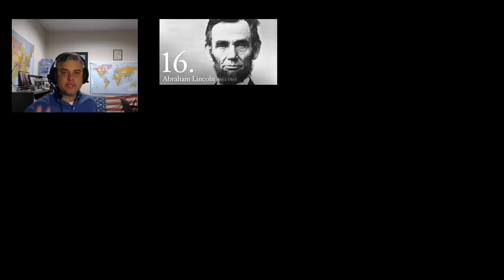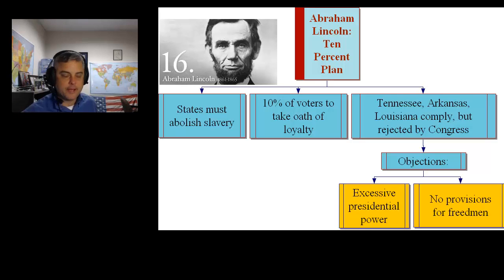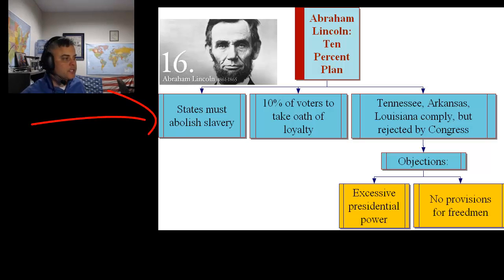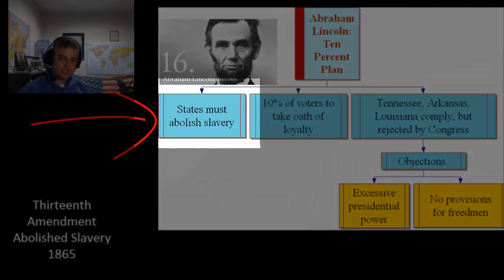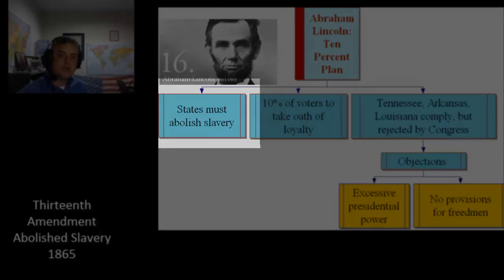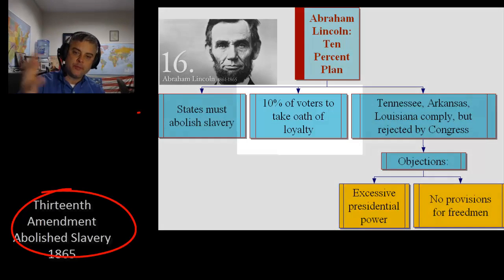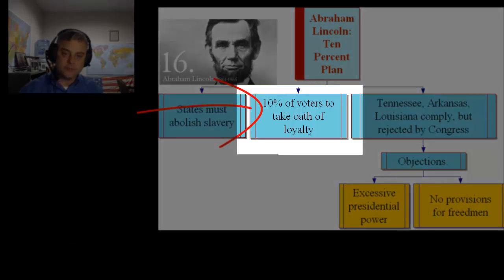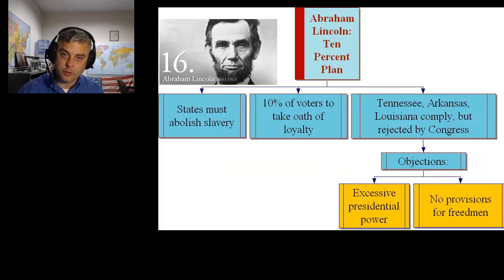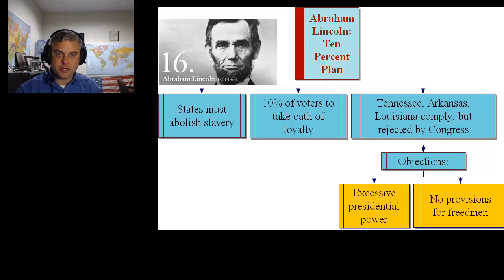So what's going to happen is he's going to issue his 10% Plan. With Abraham Lincoln's 10% Plan, all states must abolish slavery, which was made possible through the 13th Amendment, ratified in 1865. All it took for states to be brought back into the Union was 10% of voters taking a loyalty oath — meaning they promised never to secede from or rebel against the Union, the United States. When I say Union, that just means the entire United States, which under Lincoln's plan includes the South.